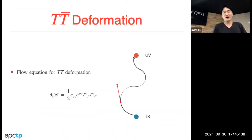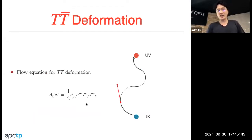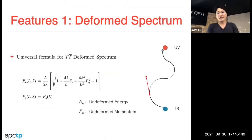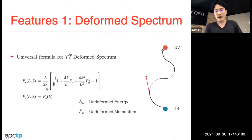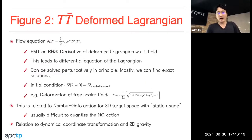The TTbar deformation is an irrelevant deformation from the IR to UV generated by the determinant of the energy-momentum tensor. One important feature is the deformed spectrum: the deformed energy and momentum is completely determined by the undeformed energy E and undeformed momentum P by a universal formula. Any quantum field theory follows this nice formula.